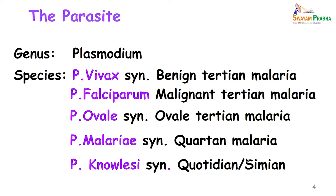These terminologies have been given depending upon the periodicity of the fever. Tertian malaria tends to peak every 72 hours, quartan malaria more than 72 hours, and quotidian occurs every day.